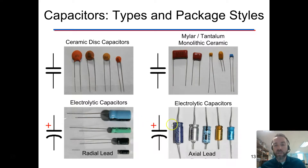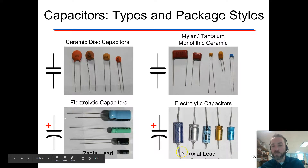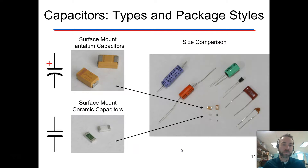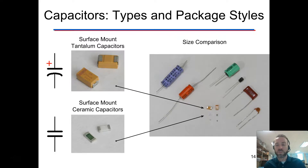On the other side, for the axial lead ones, there are actually arrows that show you the flow. Remember, we're using conventional flow, so it goes from positive to negative. Again, we have some surface mount capacitors — those we're not actually going to use, but you can see them on a printed circuit board if you opened up something small.